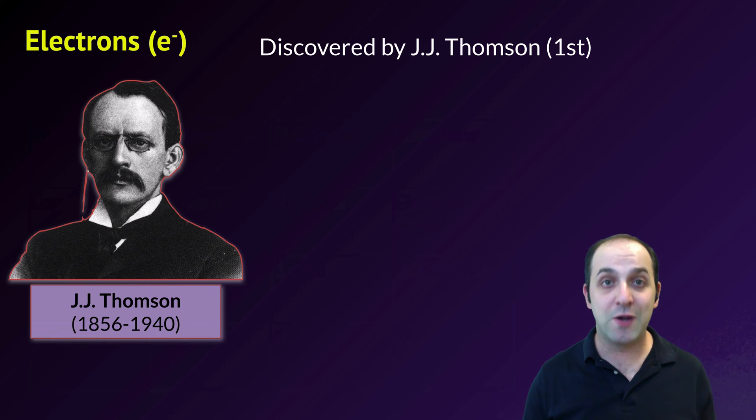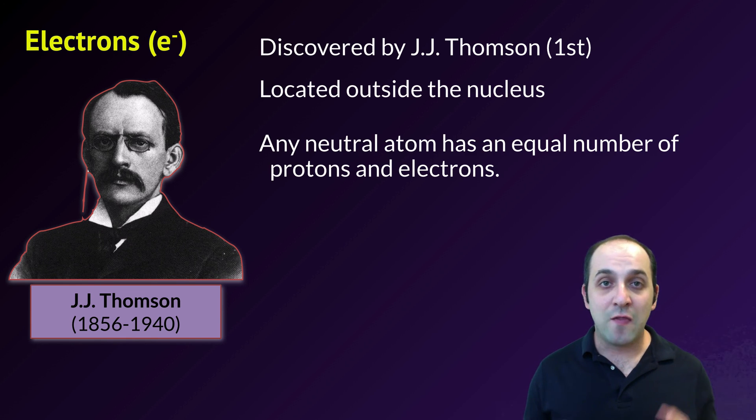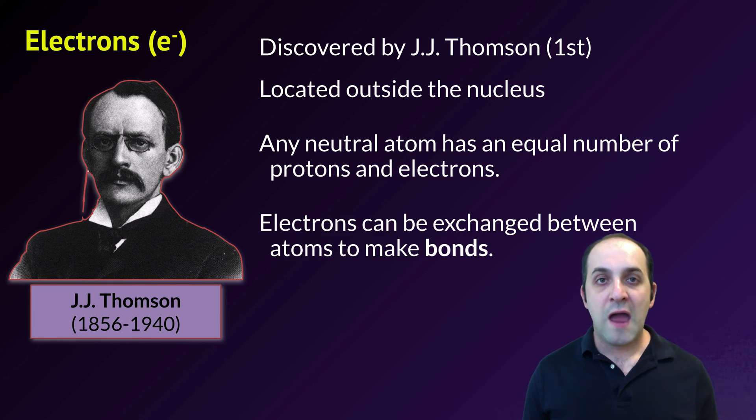We'll start with the electron because it was discovered first, by J.J. Thomson, who is an English chemist in the late 1800s. They are located outside of the nucleus. It turns out that every atom that is electrically neutral has to have an equal number of protons and electrons, and that probably makes sense to you. If the protons all have positive charges, there has to be an equal number of electrons to offset that positive charge and balance it out to bring it back towards neutral.